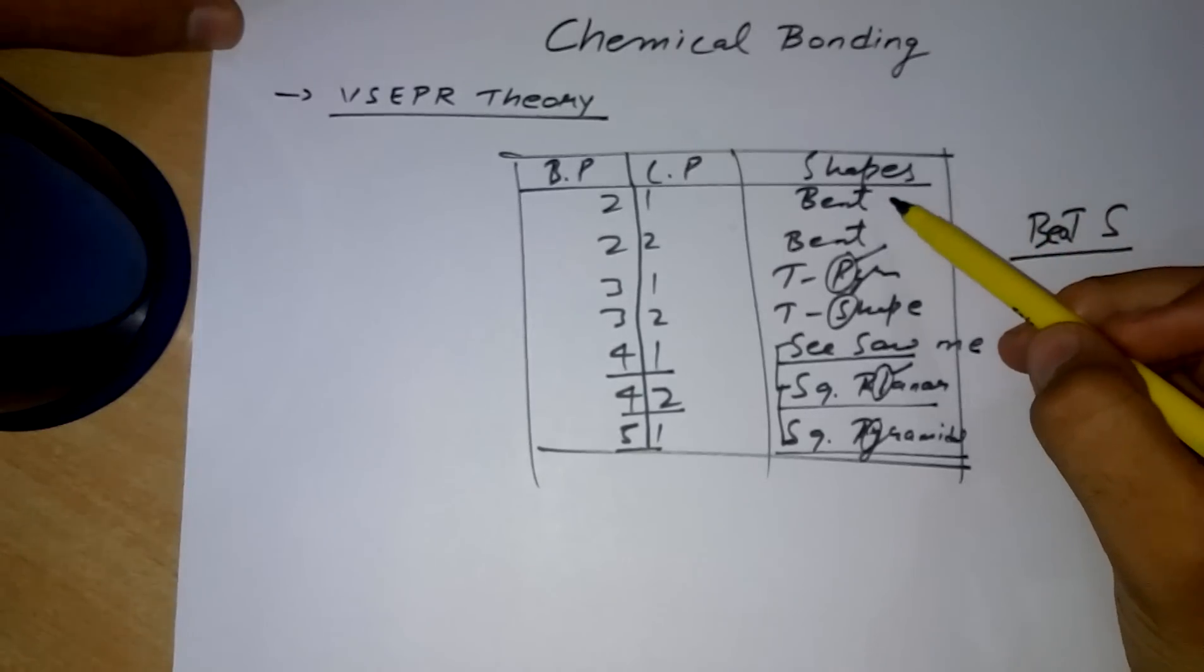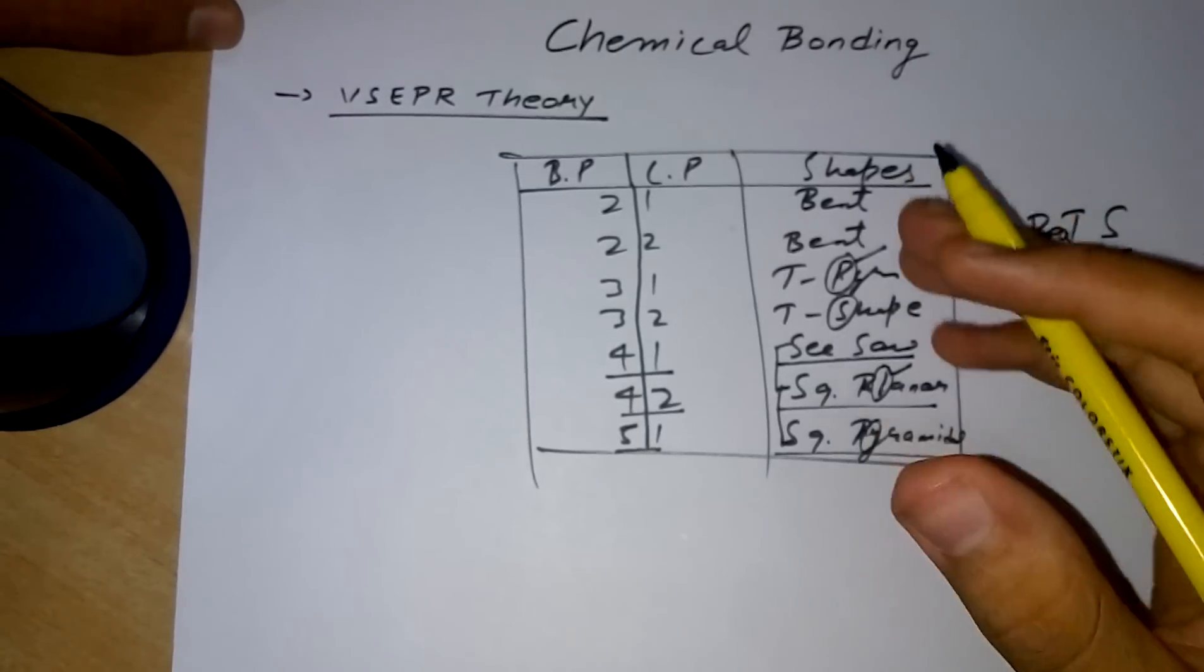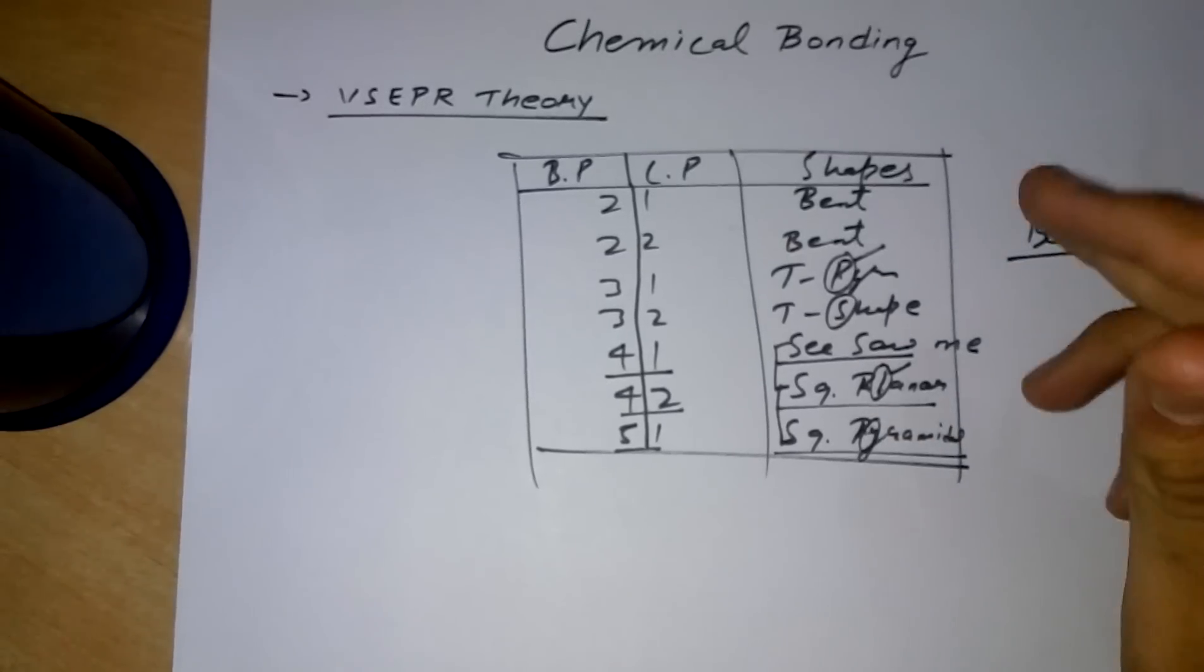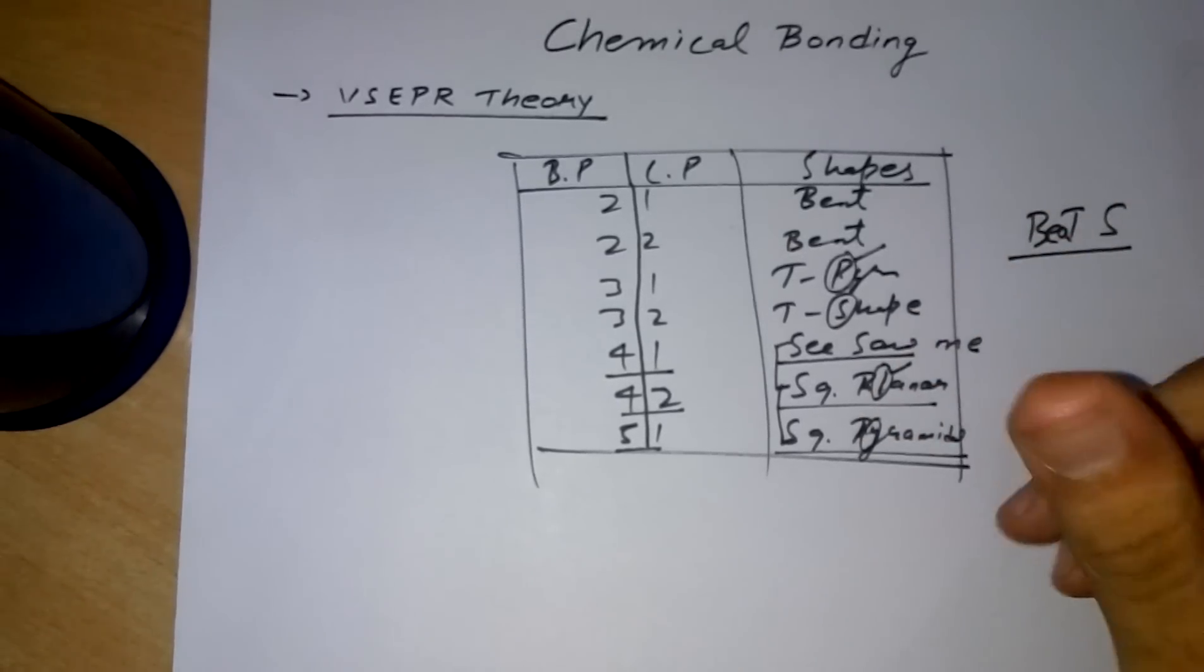Now I also have a rhyme for you: Bent, bent, T-pyramidal, T-shape, she saw me at 41 street. We made 42 square planar and 51 square pyramidal.